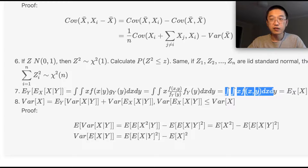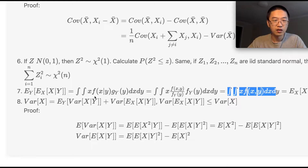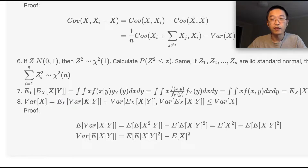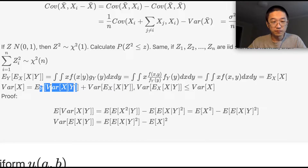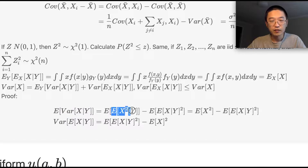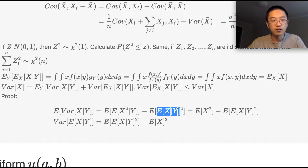So E[E[X|Y]] = E[X]. Now for variance decomposition: Var(X) = E[Var(X|Y)] + Var(E[X|Y]). The proof expands both terms. The first term, E[Var(X|Y)], uses Var(X|Y) = E[X²|Y] − (E[X|Y])². Taking the outer expectation gives E[X²|Y] terms.